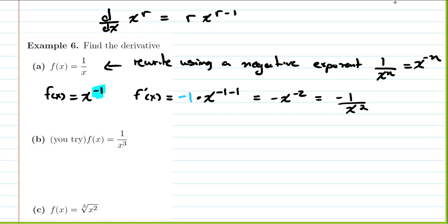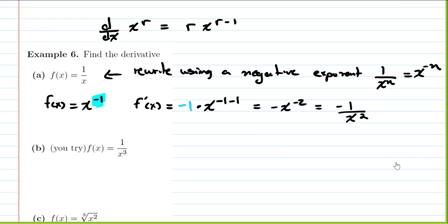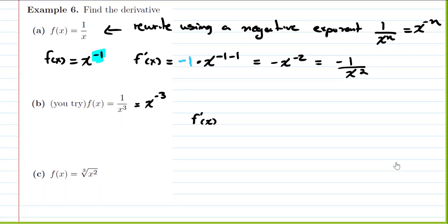Similarly, for f(x) = 1/x³, rewrite as x to the negative 3. The derivative f prime of x is negative 3 times x to the negative 3 minus 1, giving negative 4 as the exponent. Cleaning up: negative 3 over x to the fourth. Same rule — bring the number down in front and subtract 1 from the exponent.